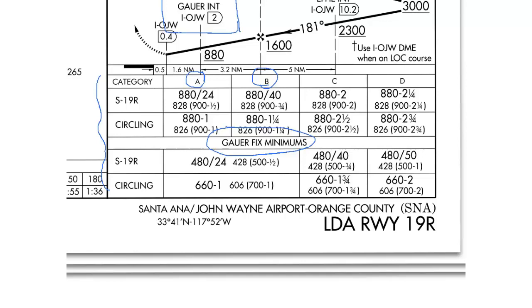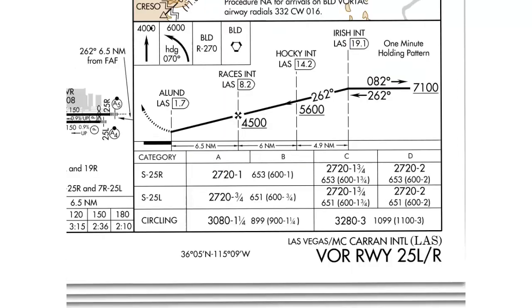It's important to note if the approach you're flying has separate minimums depending on what fixes you can receive, since often those minimums are significantly different. In this case, the ceiling requirement of 880 feet without Gower actually comes down to 480 feet if you can receive the Gower intersection. Since this is a non-precision approach, the visibility remains the same. Also take note that on this chart, runway visual range or RVR values are used all the way up to 4,000 or three-quarters of a statute mile. Many charts will actually display a one-half or three-quarters. However, if RVR is normally used at the airport, you'll definitely see those values listed on the approach procedure.